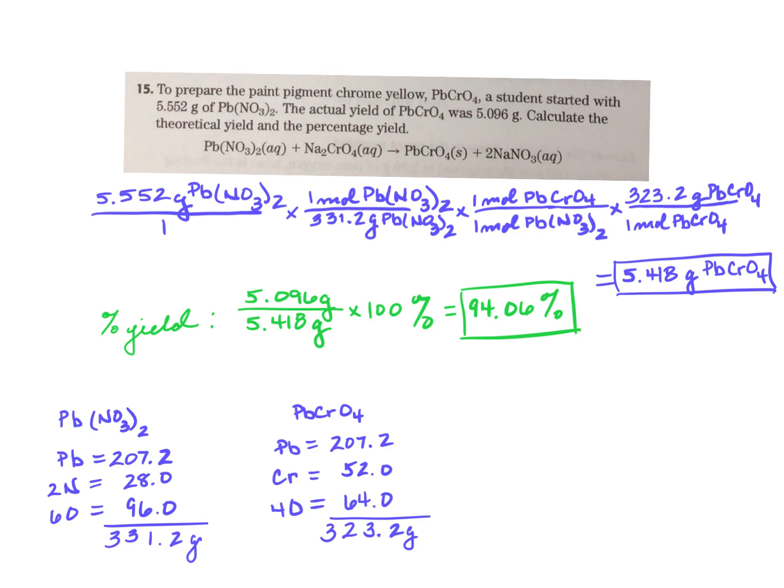And so then I did two times 14 to get 28, and six times 16 to get 96. And there again, I did round a little bit, but my total comes out to 331.2 grams per mole for the lead nitrate. So that's how I got that next number right here in the problem. You have one mole of lead nitrate for every 331.2 grams of lead nitrate.